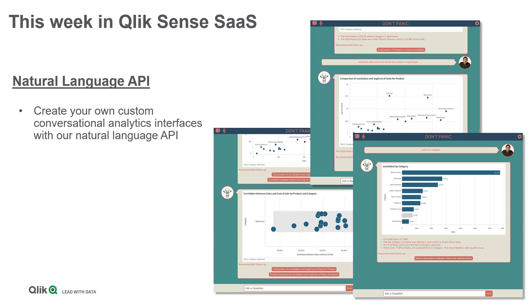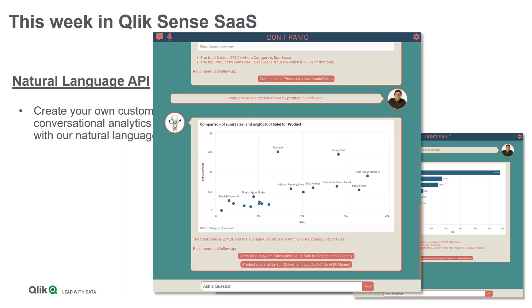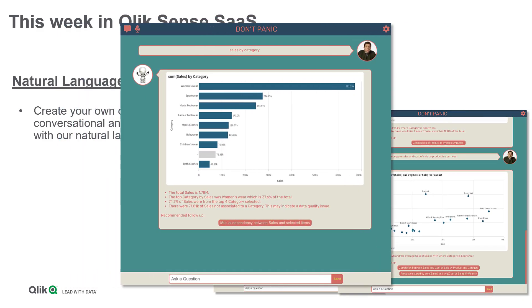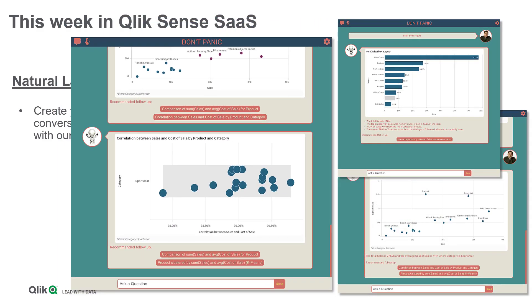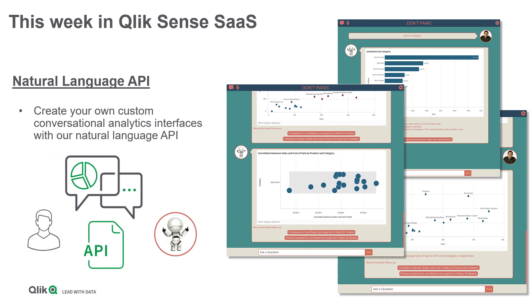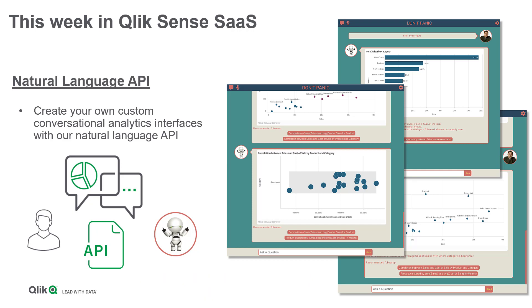Now you can take that same conversational analytics power directly from Qlik Sense and embed it into your own custom applications. We have now made the Insight Advisor natural language APIs available for both Qlik Sense SaaS and our client-managed editions. These APIs take care of all the complexities behind the scenes and allow developers to easily and quickly build custom natural language interfaces that interact with our associative and natural language engines, giving you full control on how you deliver your conversational analytics experience.